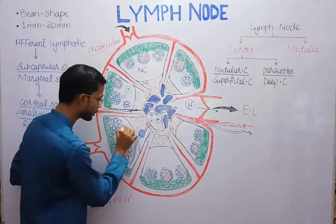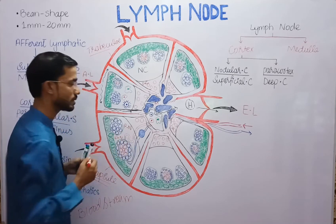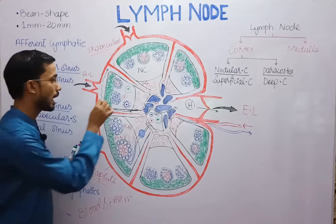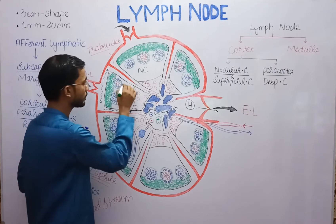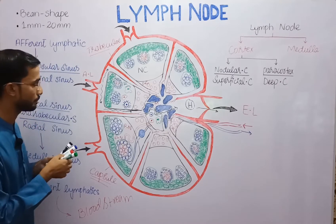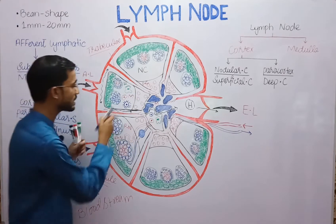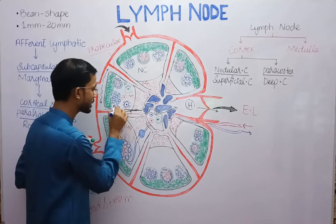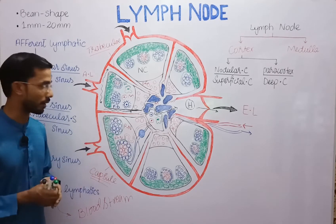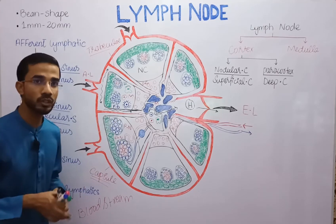There are primary nodules and secondary nodules in the nodular cortex. Three types of cells are present in this region: reticular cells, macrophages, and follicular dendritic cells.